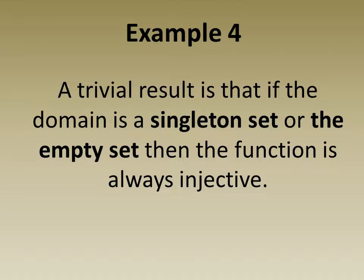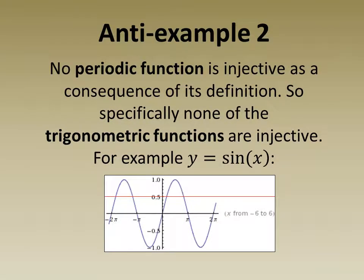In anti-example two, we see that no periodic function is injective as a consequence of its definition. So specifically, none of the trigonometric functions are injective. For example, the function y equals sine of x plotted below is not injective, as a red horizontal line showing the pre-images of 0.5 intersects the graph more than once, indicating it has more than one pre-image and so the function is not injective.